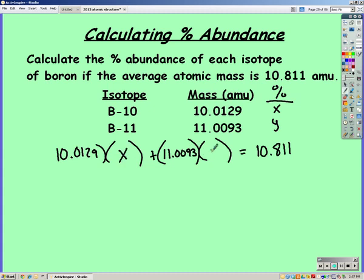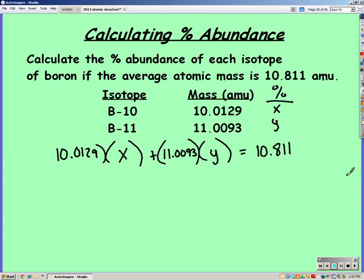We now have a system of equations. Because we have two variables, we're going to have to solve it with another equation. So our percents should add up to 100, but since we put them in decimal form, they should add up to 1. So we know that x plus y equals 1.